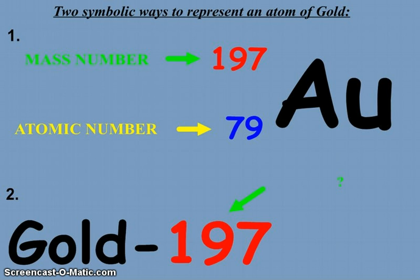So in this fashion, we have all the information we need to know about an atom. 79, the atomic number, tells us the number of protons. Since all atoms are electrically neutral, it also tells us the number of electrons.